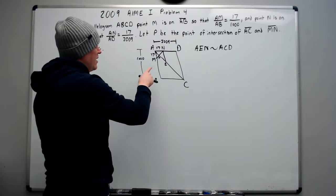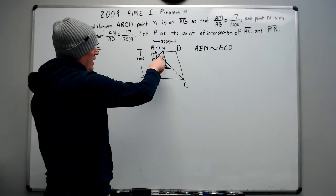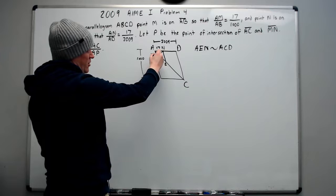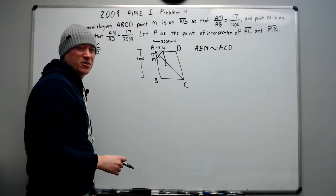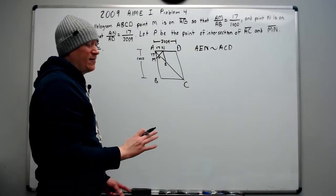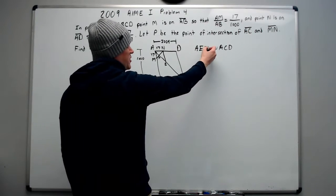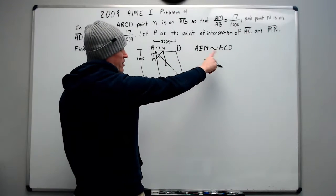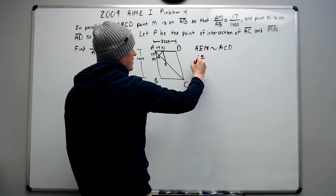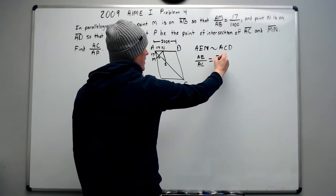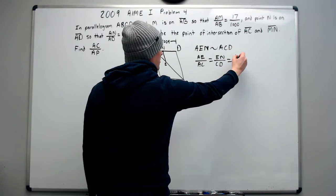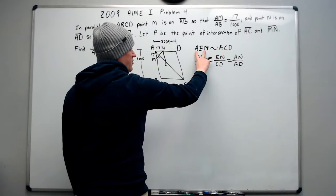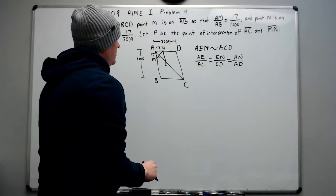In the future, if we want, which for my solution I'm about to show we don't need to, but there are solutions that use this, we can also do AMP is similar to ENP. Because these two parallel lines leave alternate interior angles congruent, and so you get similar triangles there also. There are solutions that use that. If you want to look them up, you can. The official solution actually uses that as well.